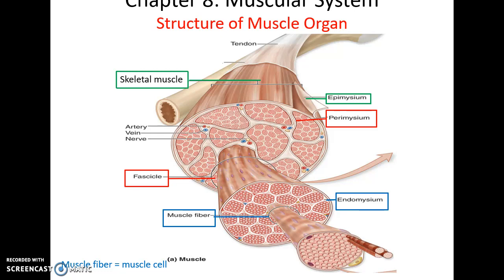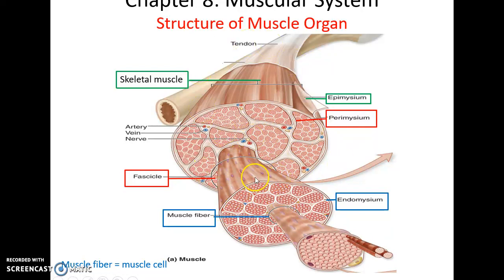The muscle organ is made up of bundles and bundles of muscle fibers — actual skeletal muscle cells — bundled together in a structure called a fascicle. Each muscle fiber is surrounded by its own sheet of connective tissue called the endomysium. The fascicles bundle up to make the organ, and each fascicle is wrapped by its own connective tissue called the perimysium. The muscle organ itself is wrapped by connective tissue called the epimysium. These three layers eventually fuse together to form the tendon that attaches the muscle to the bone or other structures.